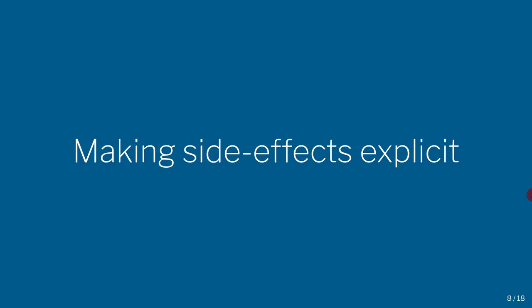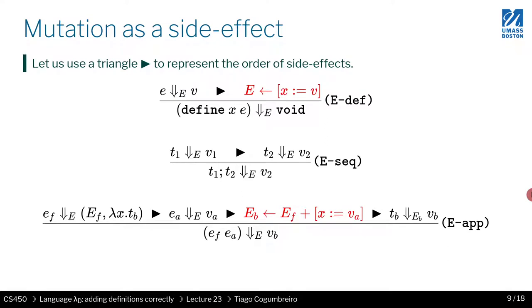I now want to revisit the rules so that we make side effects a bit more explicit. So what you'll see is that there's this little triangle here, and the triangle is just to mean that the order matters and that you should evaluate the left-hand side before you evaluate the right-hand side.